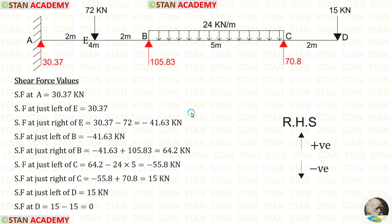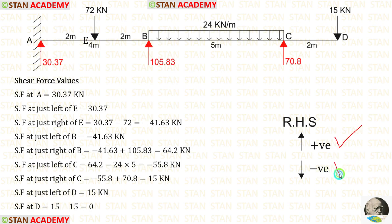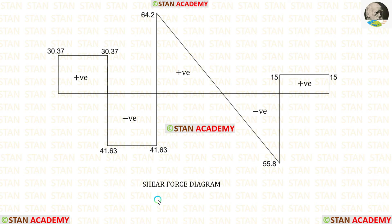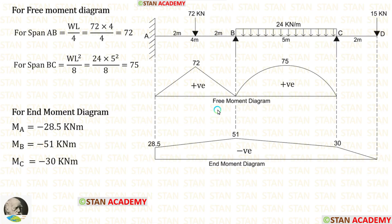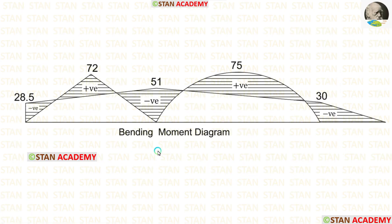Now we are going to make the shear force diagram. Before drawing, let us calculate the shear force values, moving from left to right — upward forces are positive and downward forces are negative. Using these values we can draw the shear force diagram. Then let us make the free moment diagram and the end moment diagram, and combine both to get the final bending moment diagram. Thank you for watching this video.